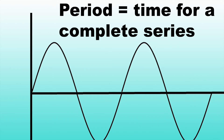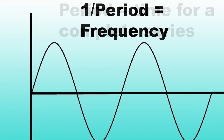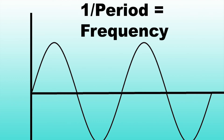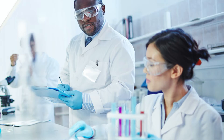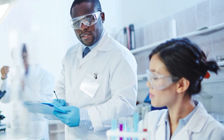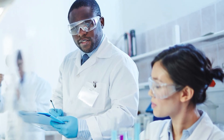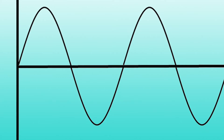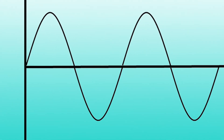Finally, the amount of waves per second, which can be found by dividing one by the period, is known as the frequency. Scientists use these four different variables to classify different transverse waves.